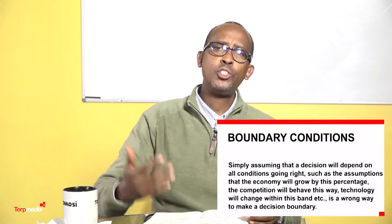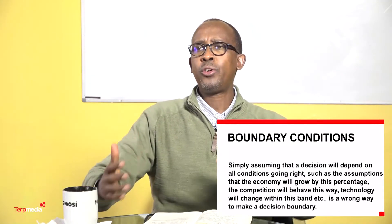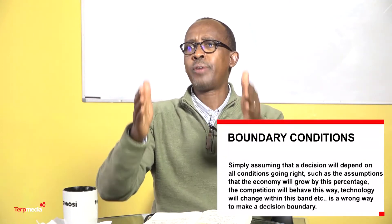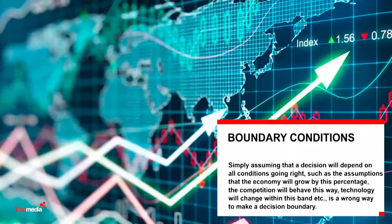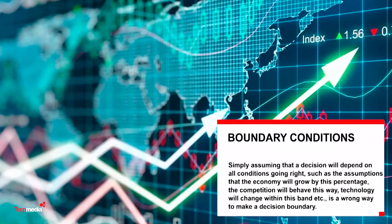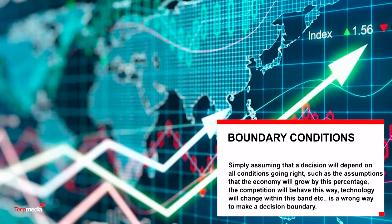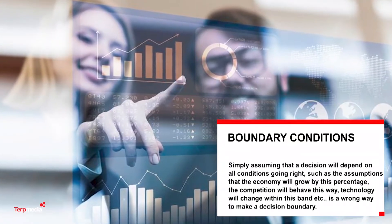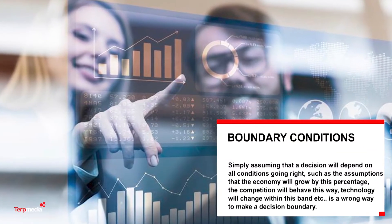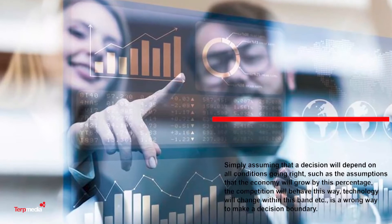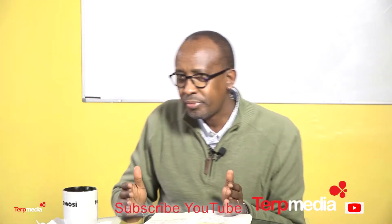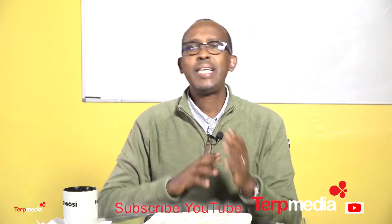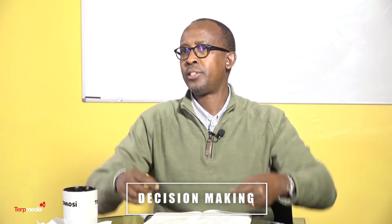Simply assuming that the decision you have made will depend on all conditions going right — such as the assumption that the economy will grow by X percentage, the competition will behave this way, technology will change within this band — this is a wrong way to make a decision boundary. In other words, there is a great deal of need for scenario planning and anticipation of what can go wrong that you must embed in a decision.